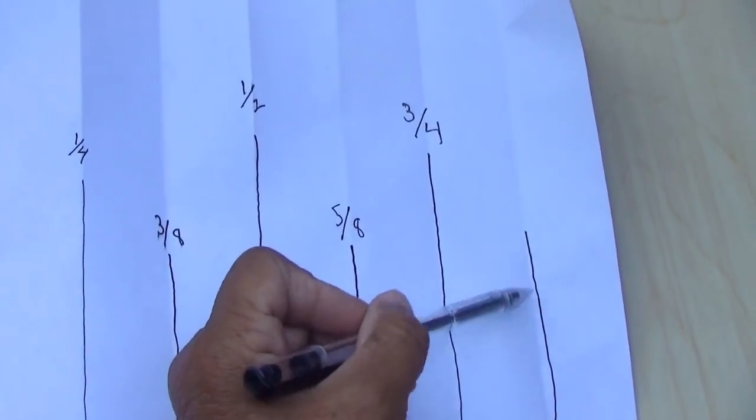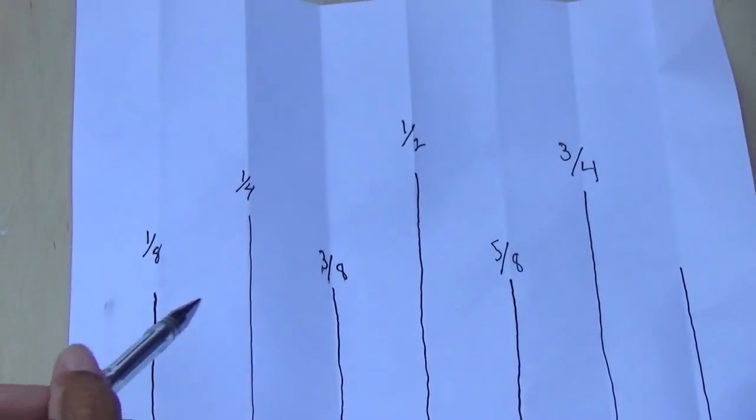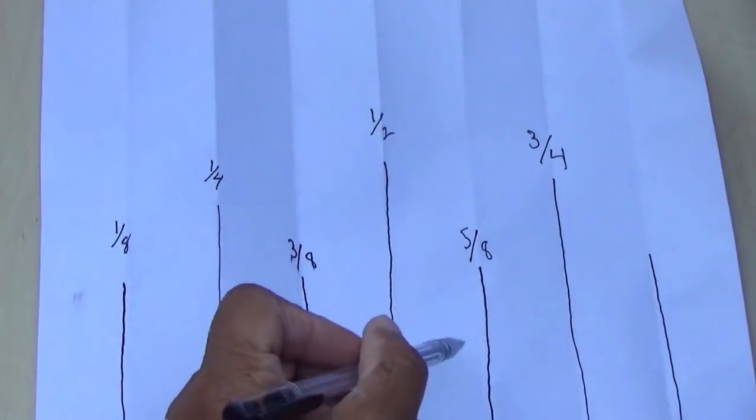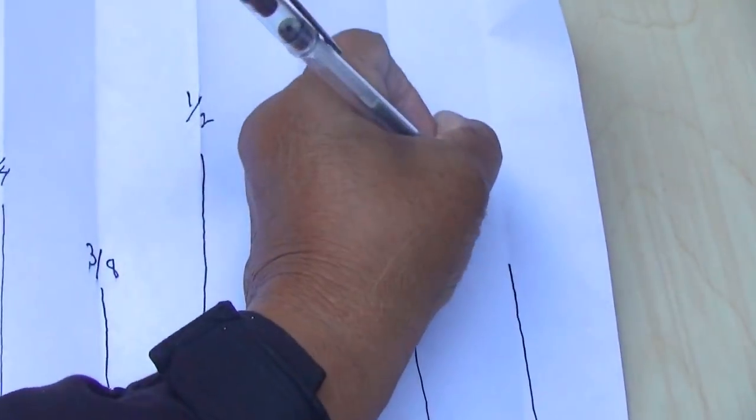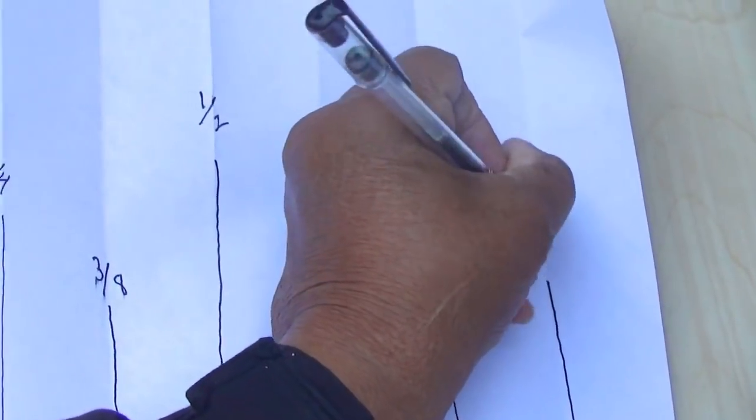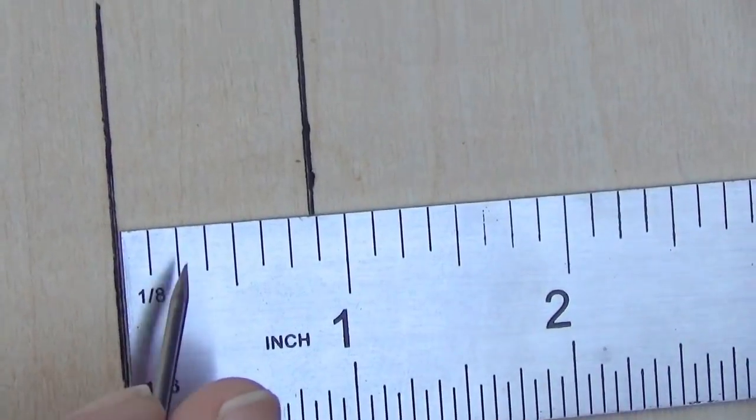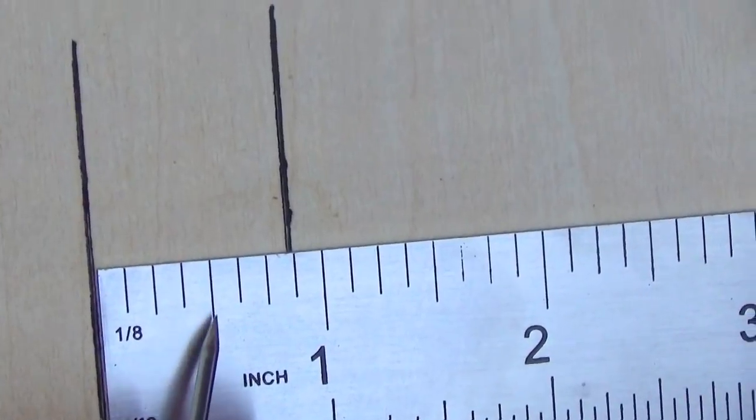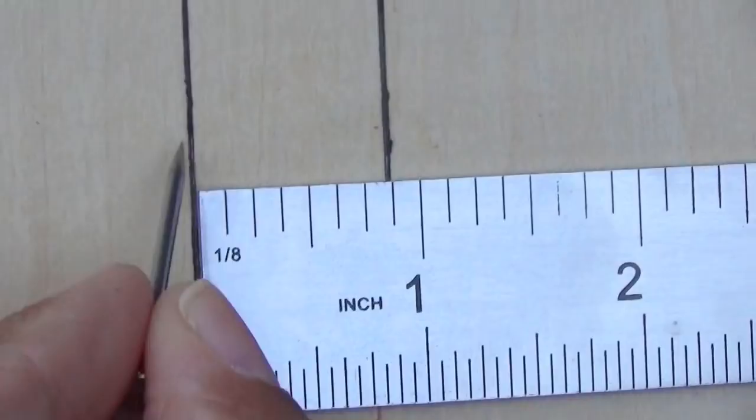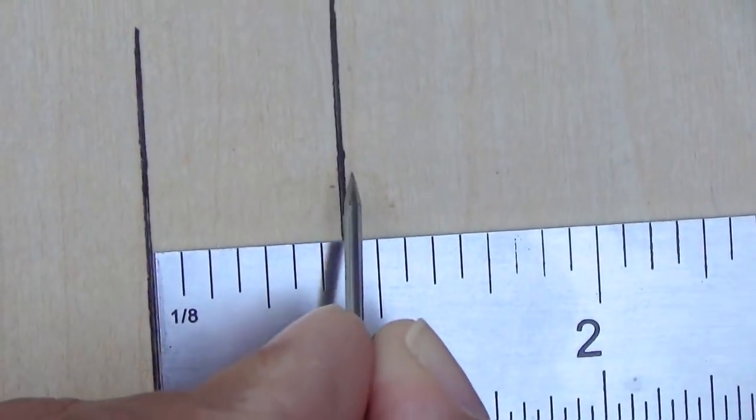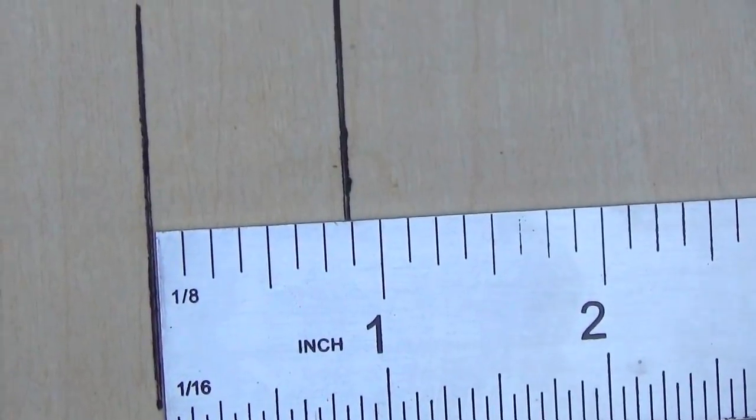So what about this last fold right here? What is that? So one, two, three, four, five, six, seven. So this becomes seven eighths. Because that's what it is. So one, two, three, four, five, six, seven. From here to this line here is seven eighths of an inch.